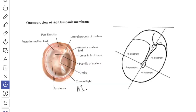Next, we'll see about the deep relations of the tympanic membrane. The anteroinferior quadrant is related to the carotid canal. The anterosuperior quadrant is related to the tympanic opening of the auditory tube. The posterosuperior quadrant is related to the long process of the incus, stapes, and the fenestra vestibuli. The posteroinferior quadrant is related to the promontory and the fenestra cochleae.